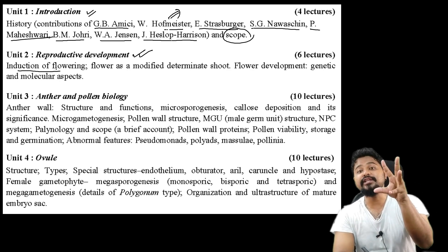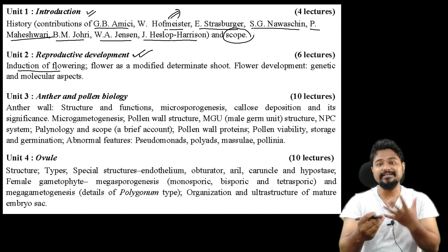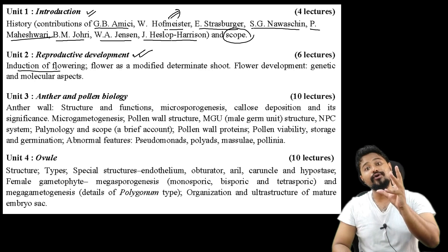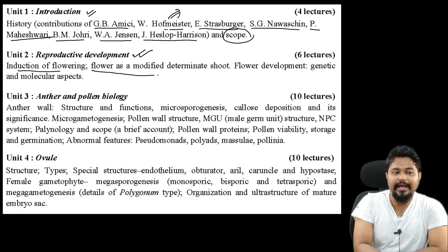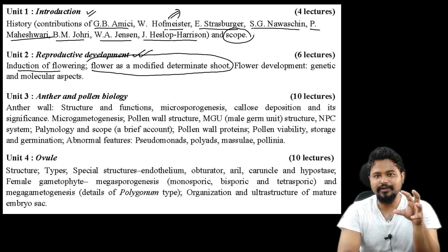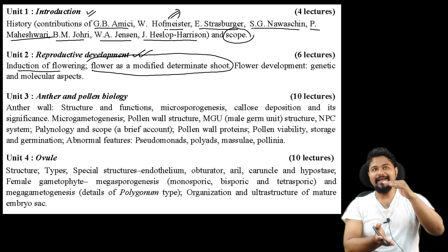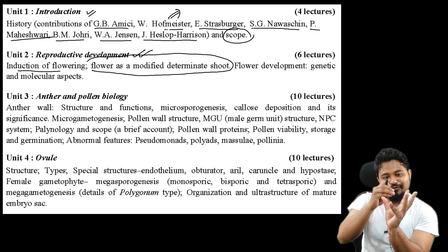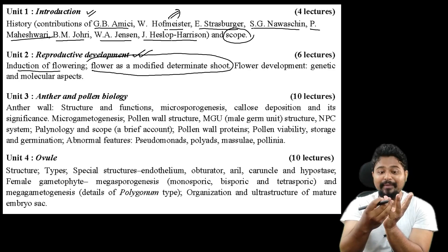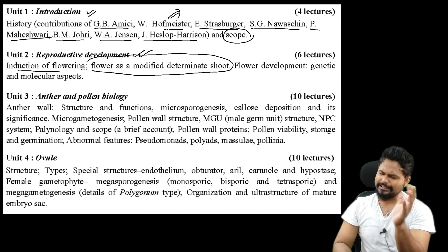Can flowering be induced? What are the key factors for flower induction? The concept is: flower as a modified determinate shoot. We closely observe the flower - it does not grow further after a certain point like a vegetative shoot. Leaves grow differently, but flowers stop at a good stage - it is a modified determinate shoot, not an indeterminate type.